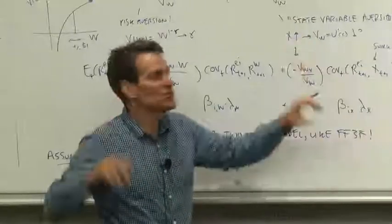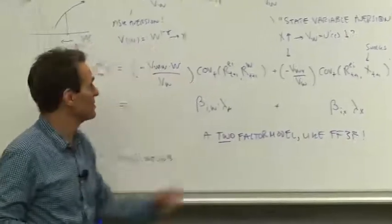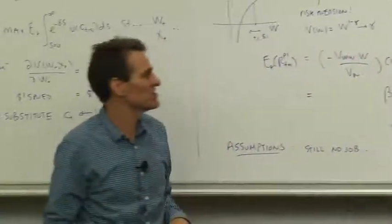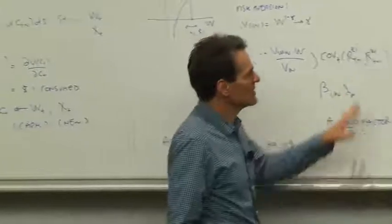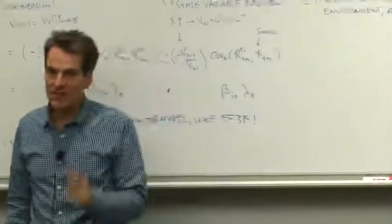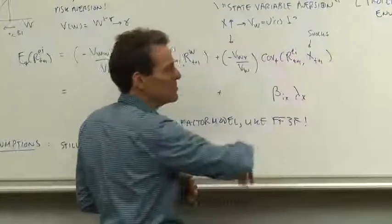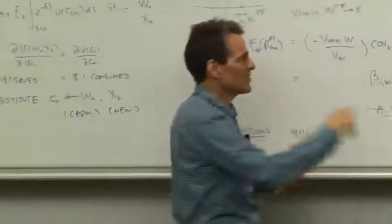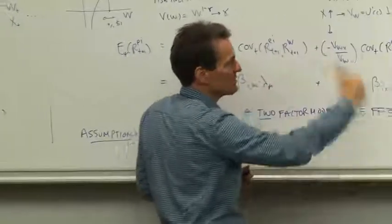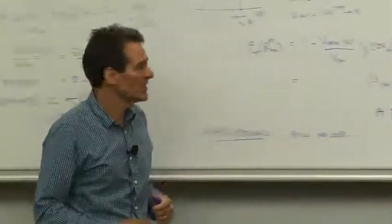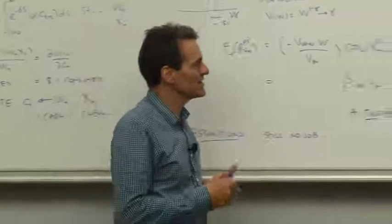Well, that's a natural aversion to the change in the state variable, just as this is the aversion to changes in wealth. Now it's a property of the value function, not the utility function. There's nothing in preferences that tells you how you feel about news and future opportunities. It's a property of the value function, which is a result of the entire environment, the investment opportunities themselves, as well as utility.